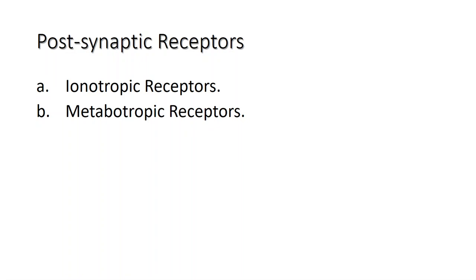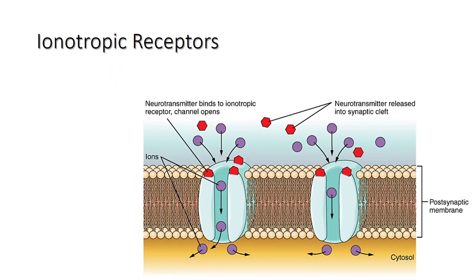The important thing to remember about neurotransmitters and signaling molecules is that their effects are entirely dependent on the activation of receptors. The post-synaptic cell surface receptors are classified into two categories: ionotropic and metabotropic. The ionotropic receptors are ligand-gated ion channels that open or close in response to binding of a chemical messenger such as a neurotransmitter.